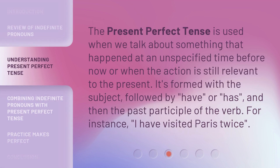The present perfect tense is used when we talk about something that happened at an unspecified time before now, or when the action is still relevant to the present. It's formed with the subject, followed by 'have' or 'has,' and then the past participle of the verb. For instance: 'I have visited Paris twice.'